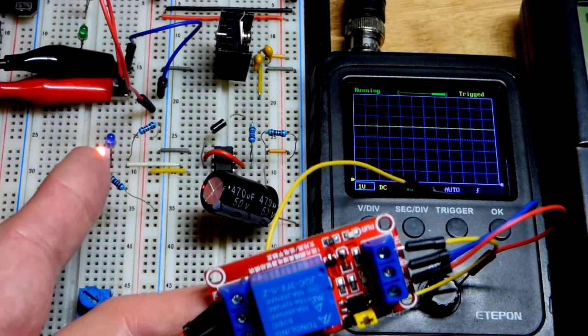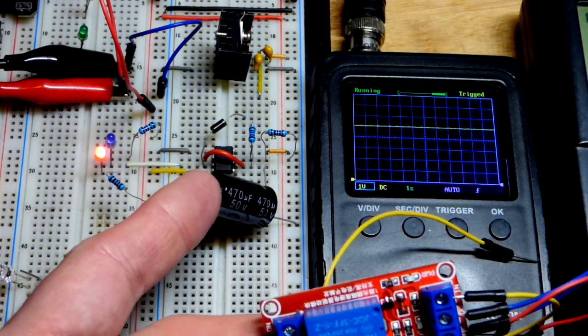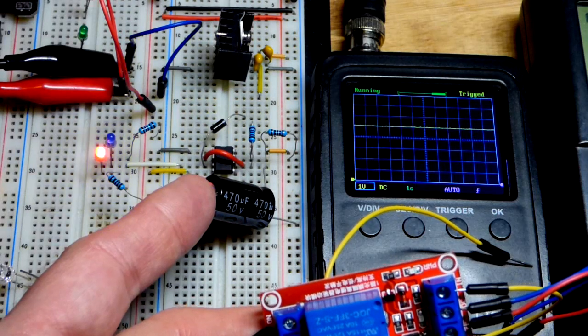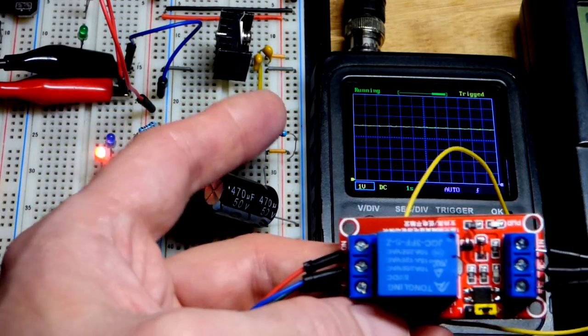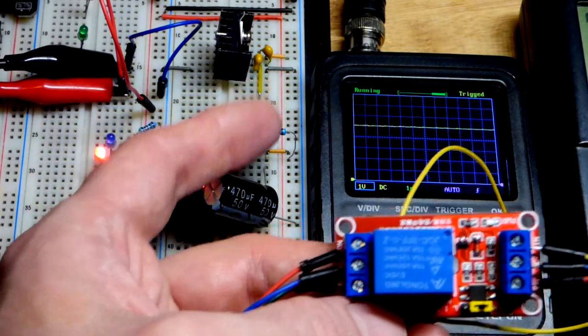So this is a 555 timer wired in astable mode right there. The timing is being set by a 470 microfarad capacitor and two 1000 ohm resistors, one kilohm right there.